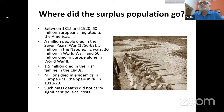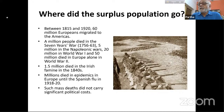Between 1815 and 1920 — roughly 100-plus years — 60 million Europeans migrated to the Americas. The population of Britain today is 60 million. That is the size of a large European country today, and it's the population that actually emigrated to North and South America from Europe in those hundred years, precisely the years of capitalist industrial revolution.